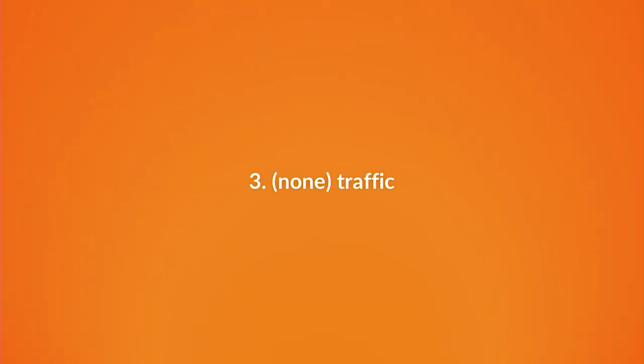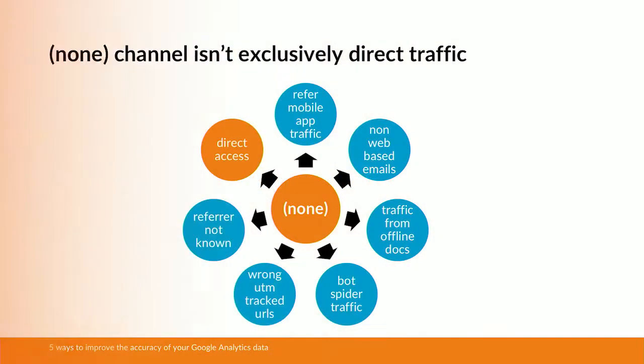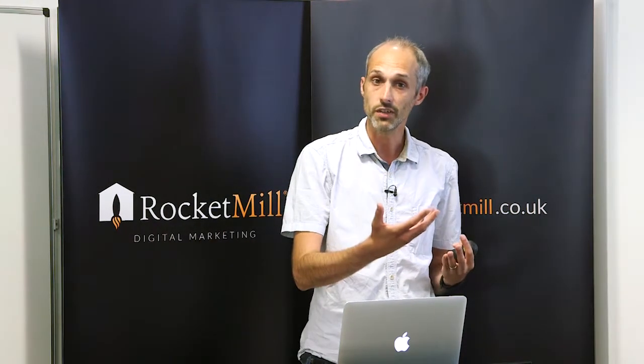Now I'm going to move on to the none traffic channel. I've worded that quite carefully — I didn't just say direct traffic — because the none traffic channel is more than just direct traffic. It actually has a lot of noise around it. For example, any traffic referred from mobile apps, any traffic arriving from non-web-based email (such as Outlook installed on your PC), any bot and spider traffic can work its way into the none traffic channel. In fact, any traffic where Google Analytics doesn't know the referral, it puts into the none traffic channel.